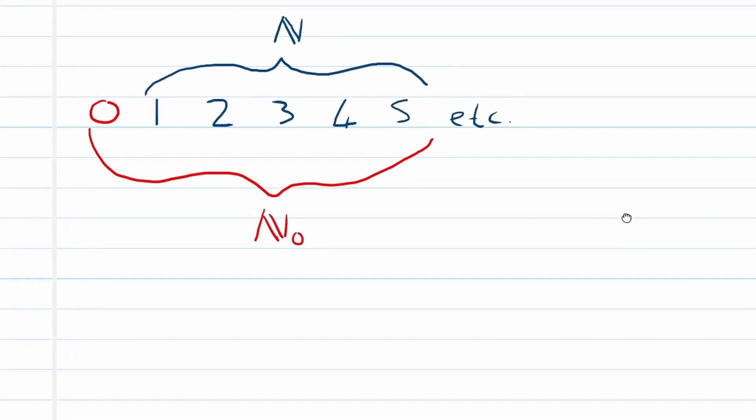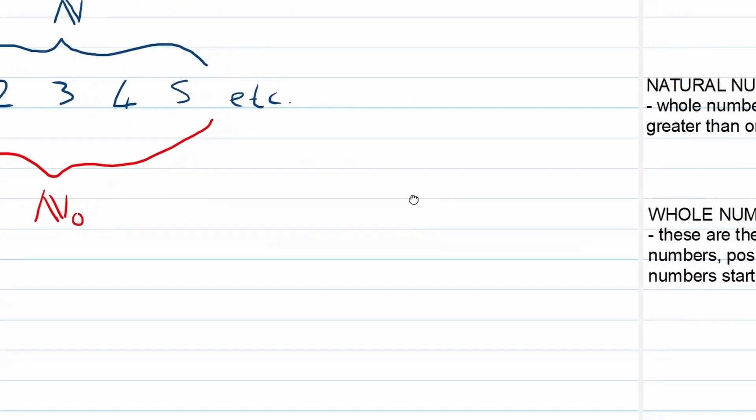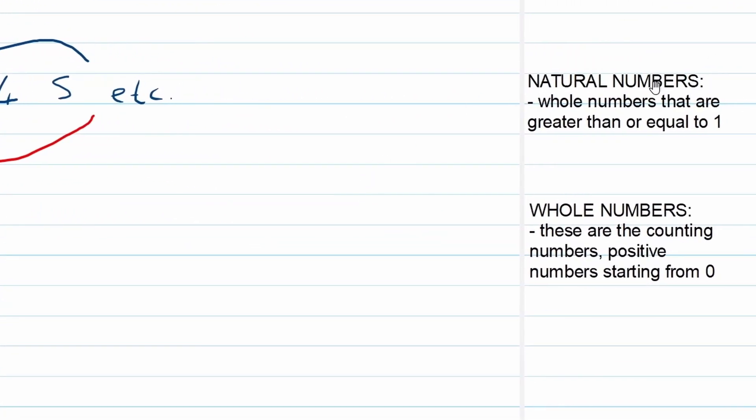And this is what I want you to remember the moment we talk about formal definitions. Natural numbers: whole numbers that are greater than or equal to 1. So remember, just naturally we count by starting at 1: 1, 2, 3, 4, 5, etc.